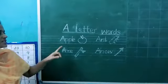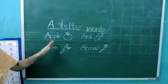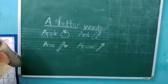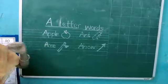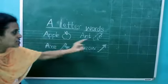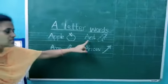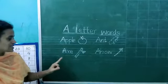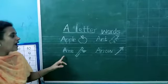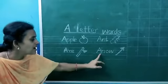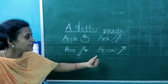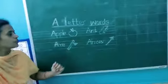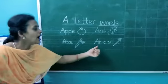Okay kids, see and tell me. What is this word? Apple. What is this word? Apple. This is ant. What is this word? Ant. This is axe. Say once again — axe. This is arrow. Say once again — arrow.